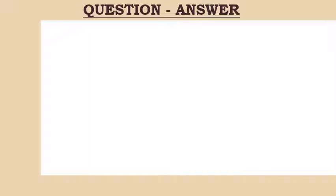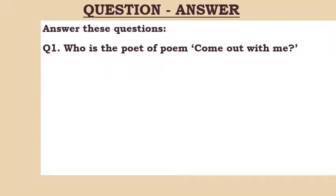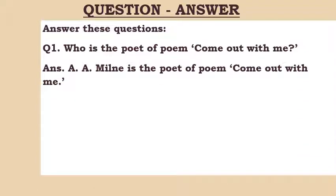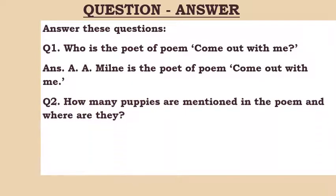Starting with Question 1: Who is the poet of the poem 'Come Out With Me'? This is a very important question because when you study a poem, you should always remember who wrote it. A.A. Milne is the poet of the poem 'Come Out With Me.' Question 2: How many puppies are mentioned in the poem, and where are they?